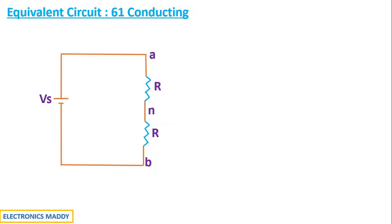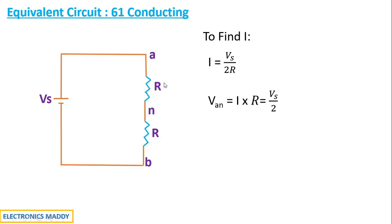From this circuit we find the current I, because we need the individual phase voltages to draw the phase voltage and line voltage waveforms. The overall resistance is R plus R in series, so I equals Vs divided by 2R. Van is the voltage across resistor R, which equals I times R, giving Vs by 2. Similarly, Vbn equals minus Vs by 2 since the resistance values are equal but referenced to the negative terminal.